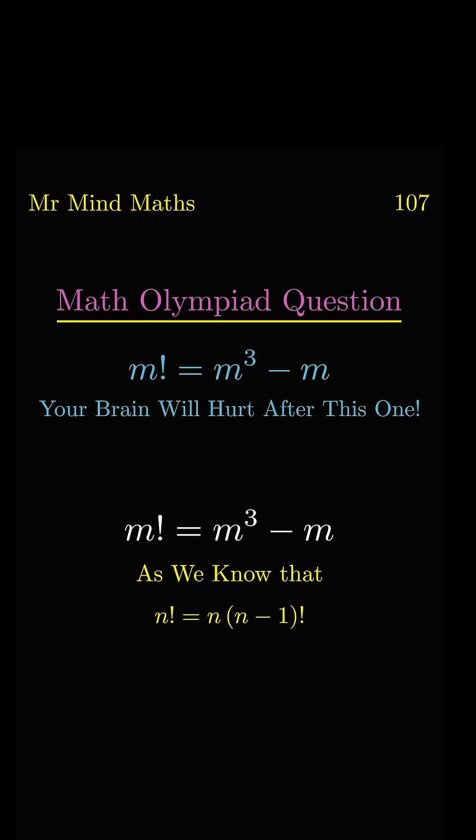So on the left hand side we will use the same identity for m, but on the right hand side we will take common m. Now m will get cancelled on both sides. Now here is the tricky part: that one can be written as one square.